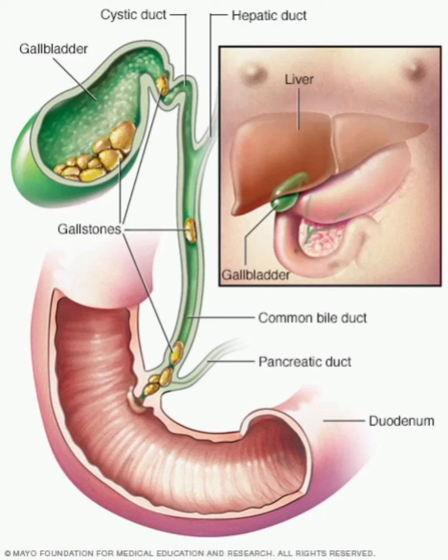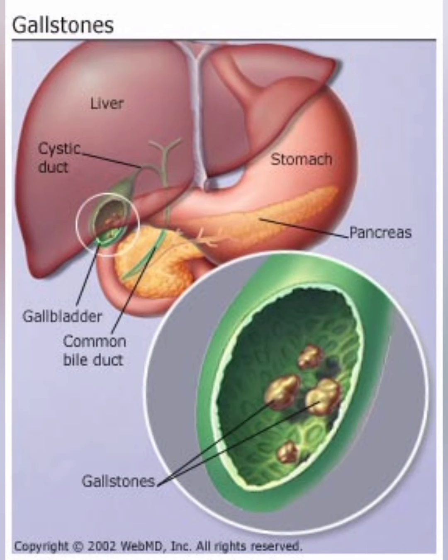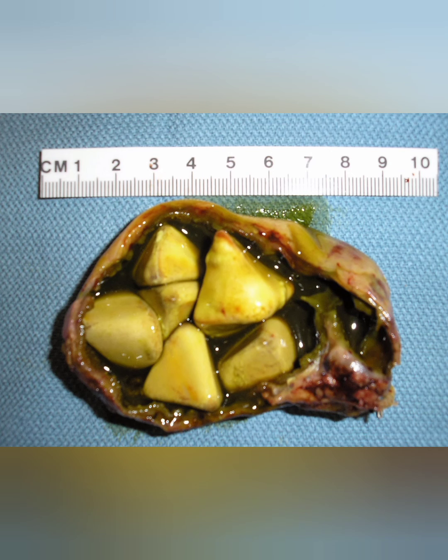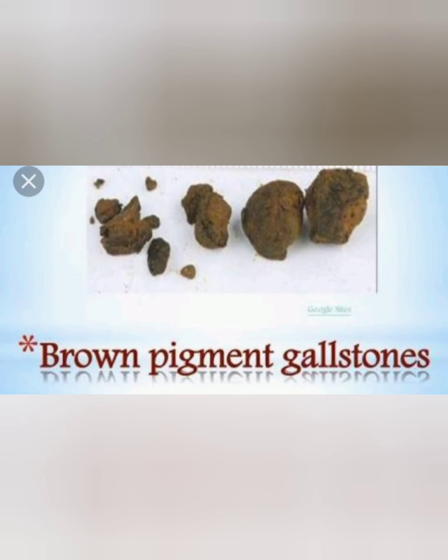Gallbladder stone and homeopathic medicine. Types of gallbladder stone: 1. Cholesterol stone. 2. Pigment gallstone. Cholesterol gallstone is the most common type of gallstone and appears yellow in color. Pigment gallstone is dark brown or black in color and forms when bile contains too much bilirubin.